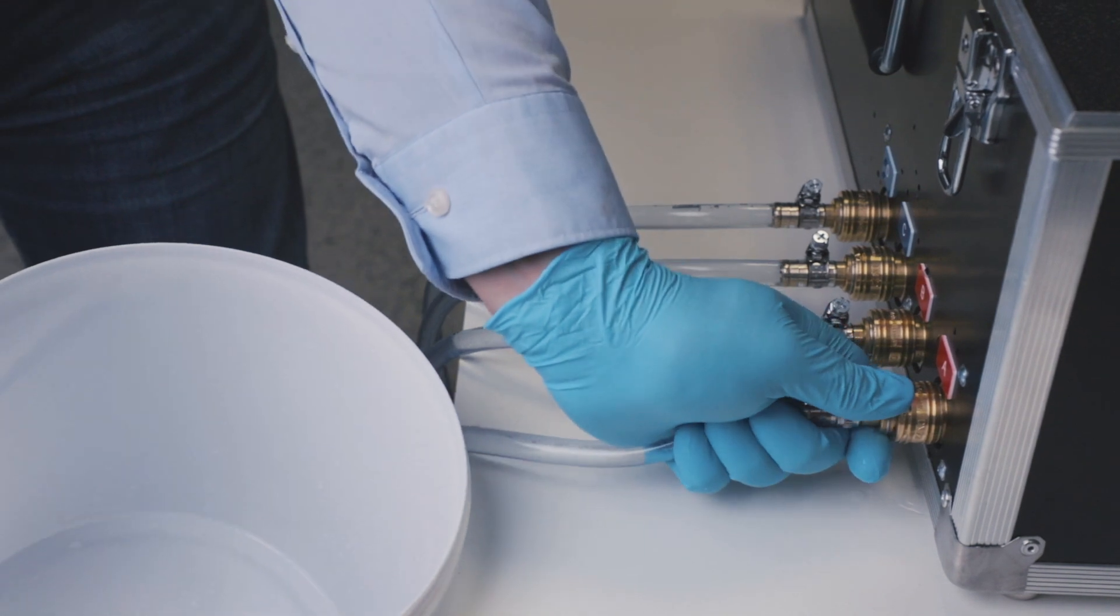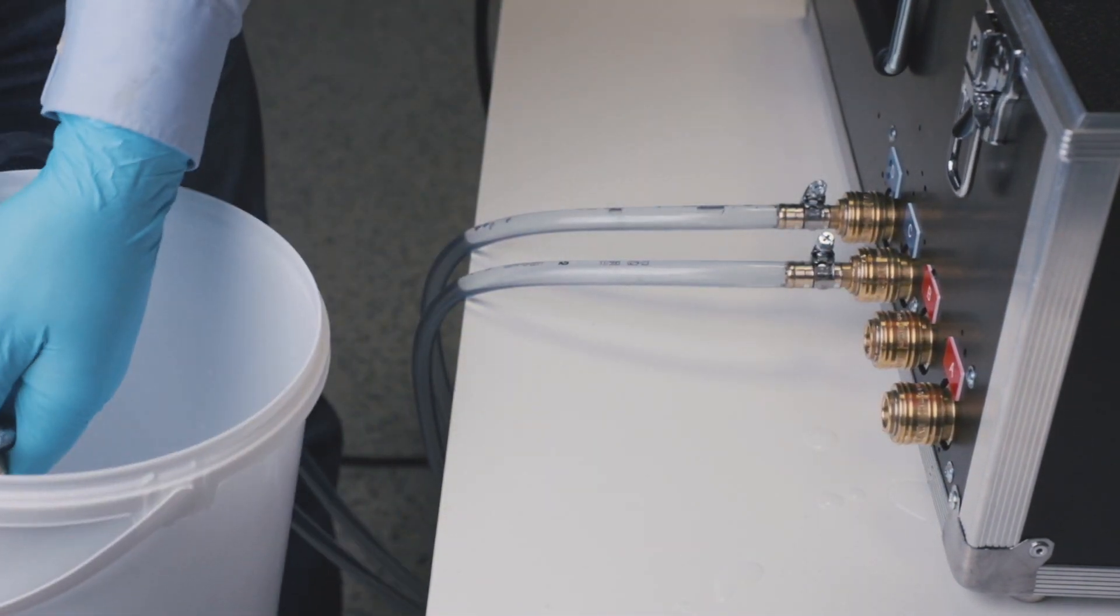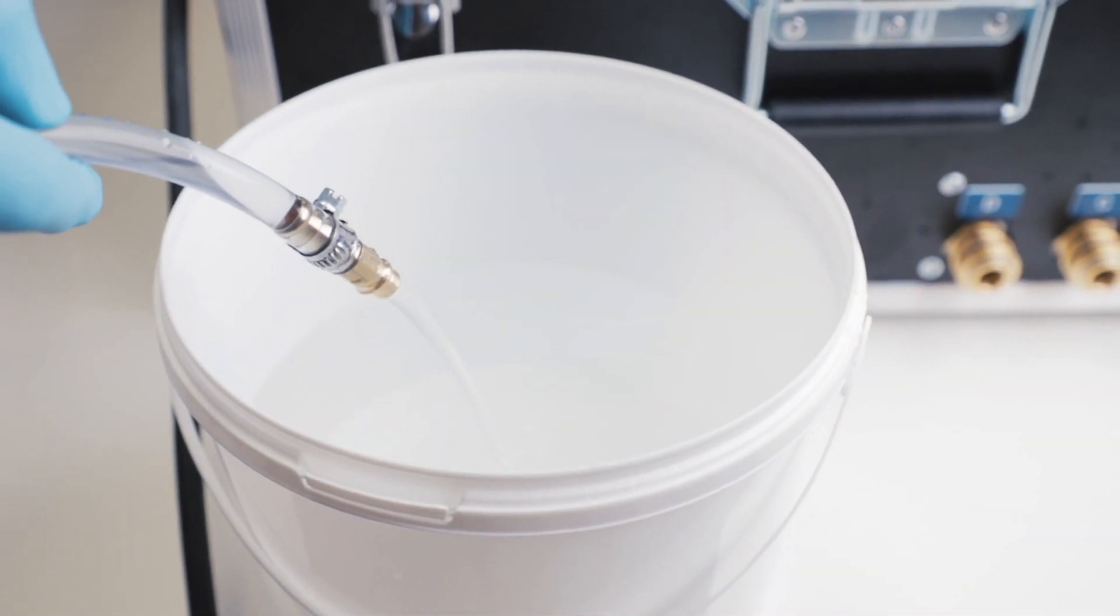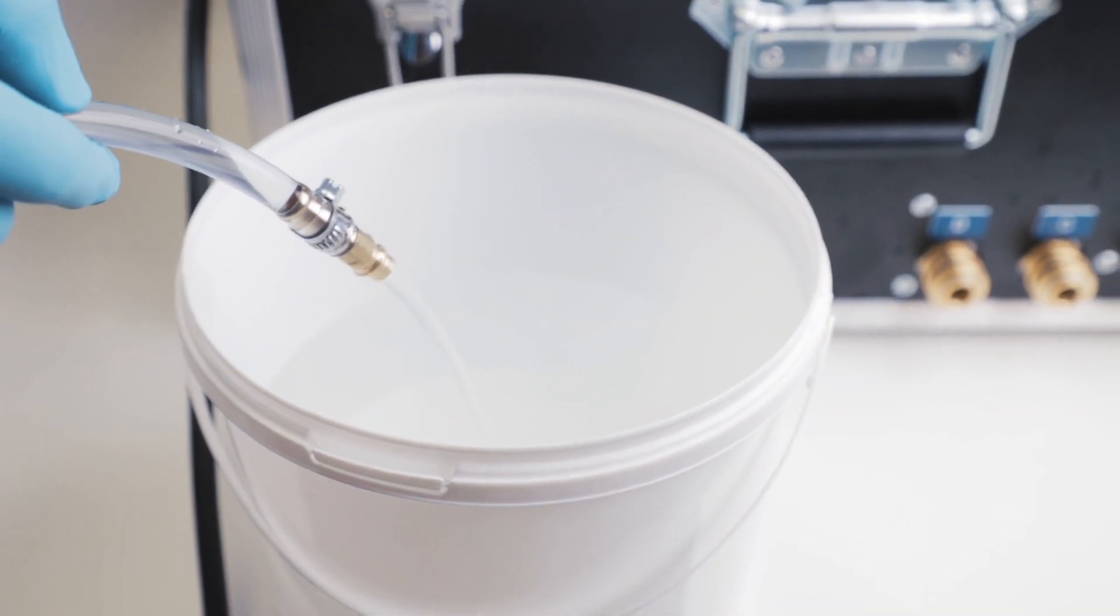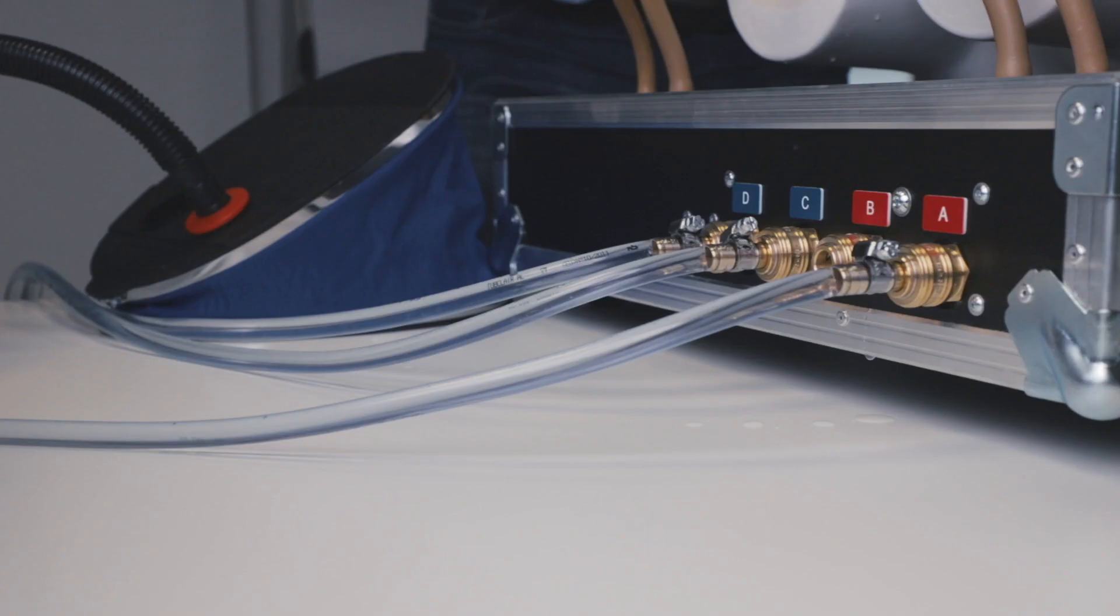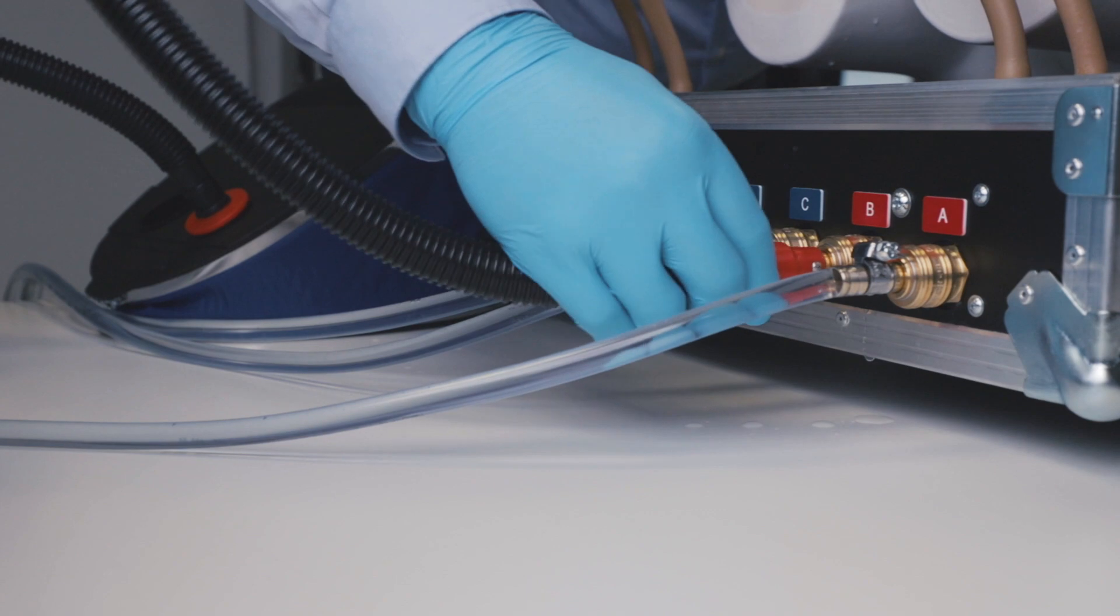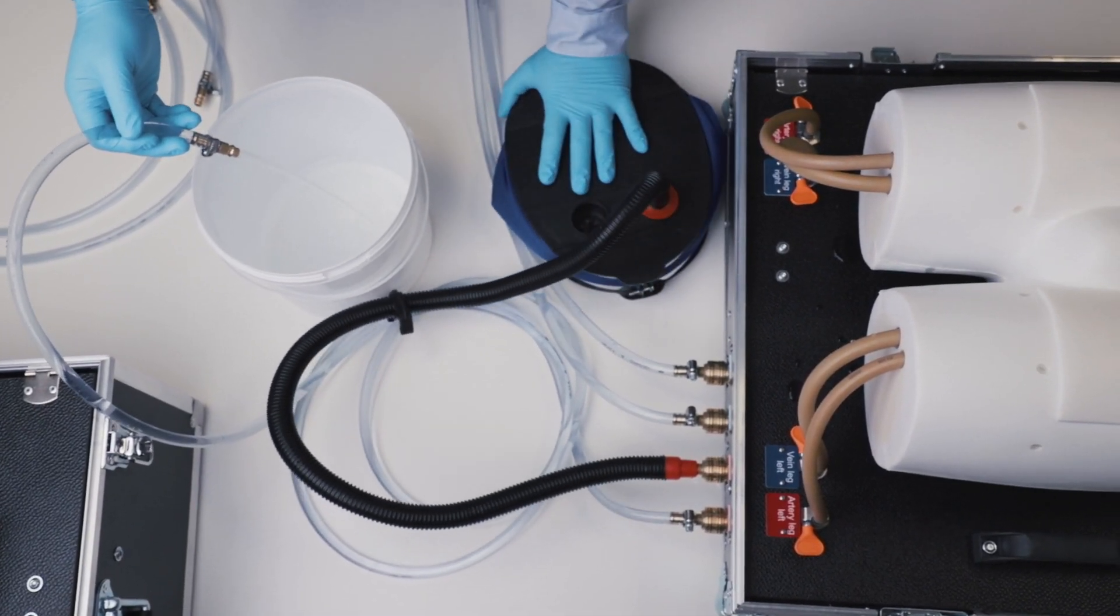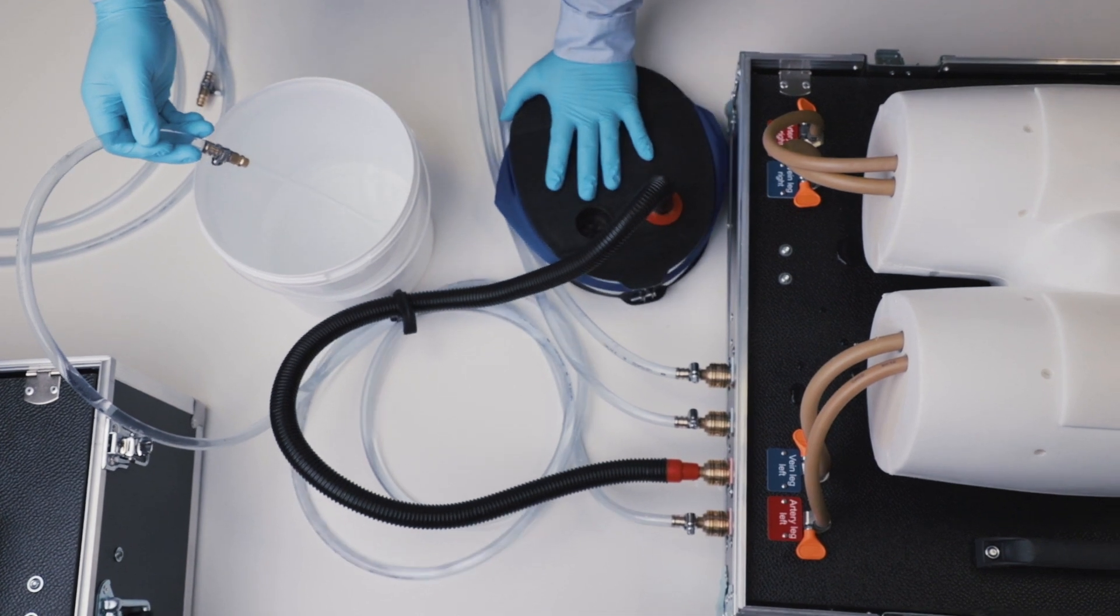Remove tubes A and B from the pump case. Put one tube end in a bucket so that the water can flow out. Remove the other tube and connect the air pump. Pump air into the tube to remove all water and do the same procedure with circuits C and D.